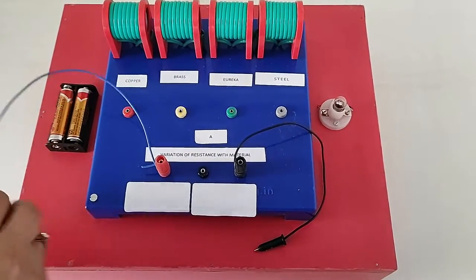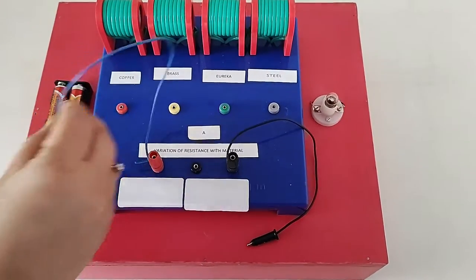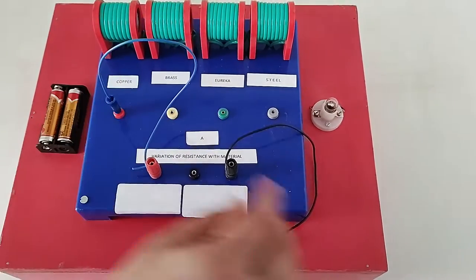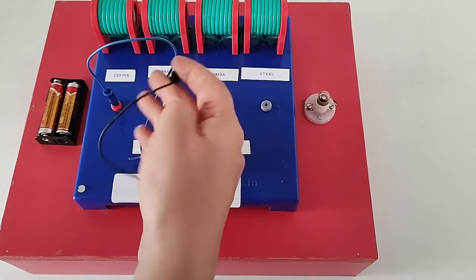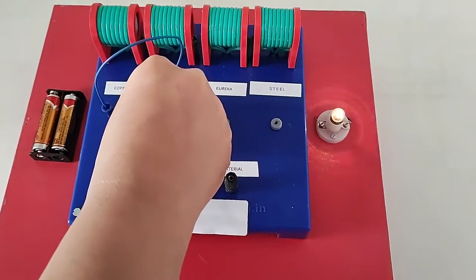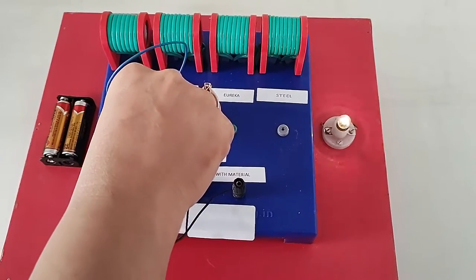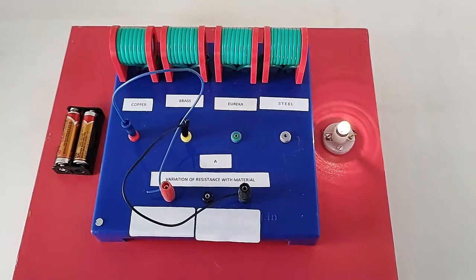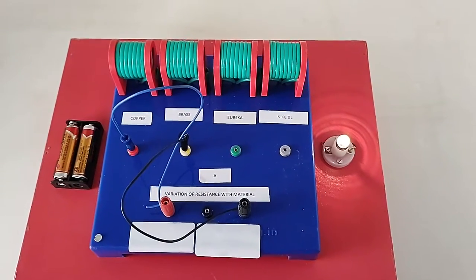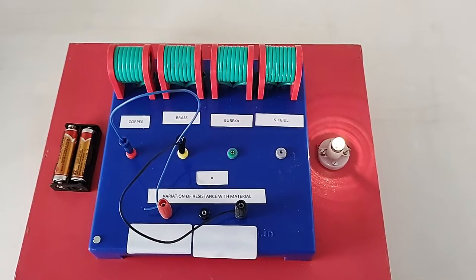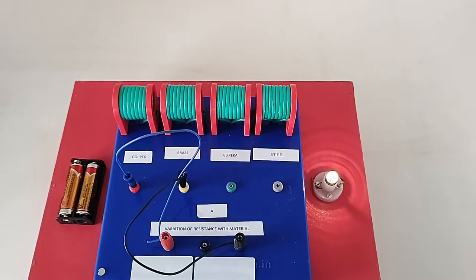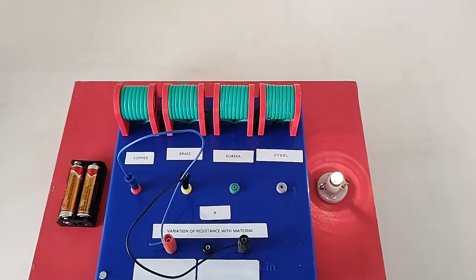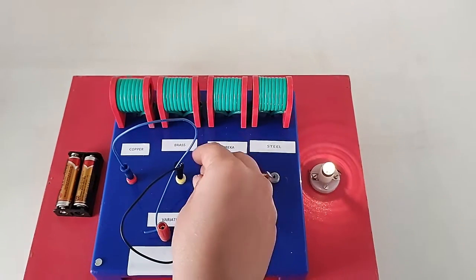If you insert these banana clips in the first two strips, you can see that the bulb is glowing. Which material is there in the circuit? Right now it is a copper coil. So that is why the bulb is glowing. Now just keep in mind the intensity of the bulb.